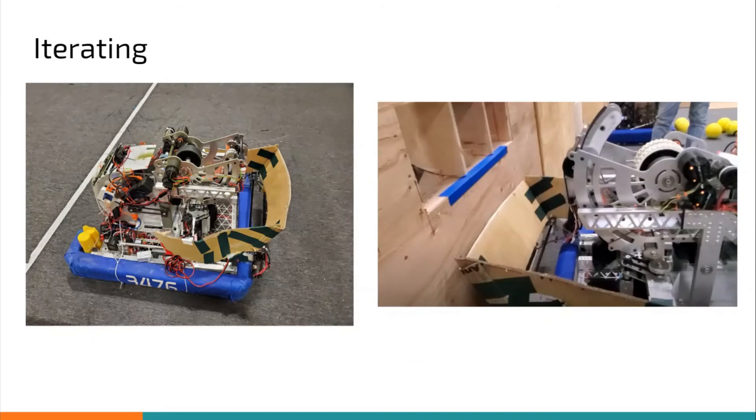Our original intake design had trouble consistently intaking from the human player station because the gap was too large. About half the time, the ball would bounce to the wrong side of our top roller instead of into our hopper. So we added a cardboard funnel to guide the balls from the loading station directly into our hopper. This will be officially added in polycarb for the next iteration.